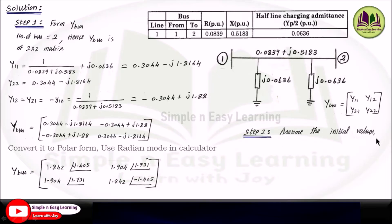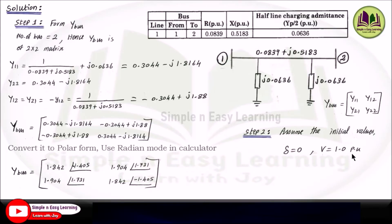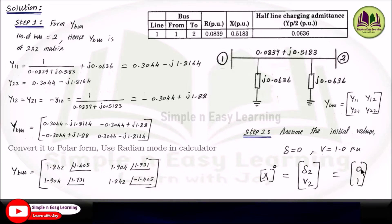Step 2: Assume the initial values. In a power flow solution, we assume the flat profile voltage of 1 angle 0, meaning the voltage magnitude is 1 and the voltage angle delta is 0 degrees. The first bus is assumed to be a slack bus, and for the second bus we assume the voltage in matrix form as delta 2 equal to 0 and V2 equal to 1 per unit.